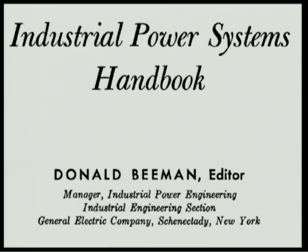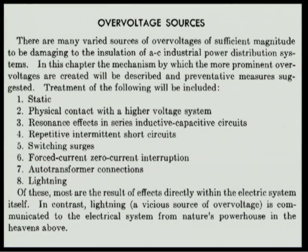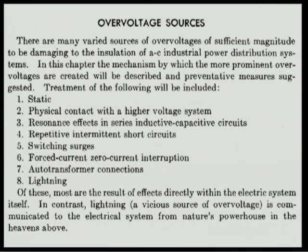Overvoltage is explained clearly in this book, Industrial Power Systems Handbook by Beeman. I just ordered this online — it's a 1952 book. The books written in the 40s and 50s, engineering books — man, some of that stuff was just golden. In this particular book, here's what he says: overvoltage sources. There are many varied sources of overvoltage of sufficient magnitude to be damaging to the insulation of AC industrial power distribution systems. In this chapter, the mechanisms by which the prominent overvoltages are created will be described and preventive measures suggested.